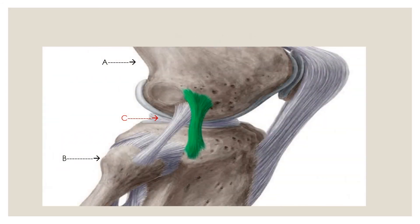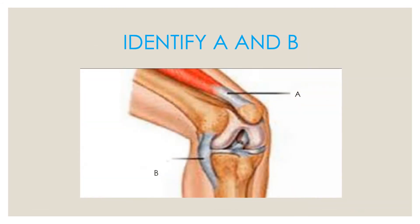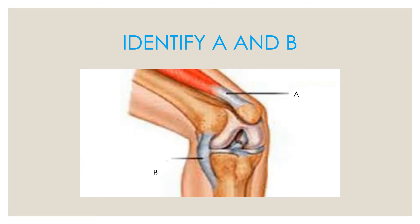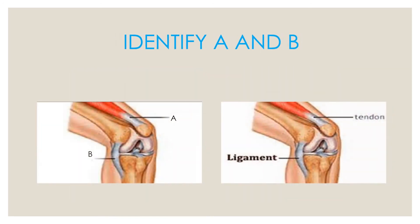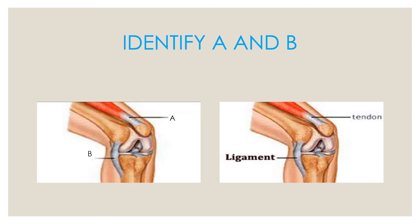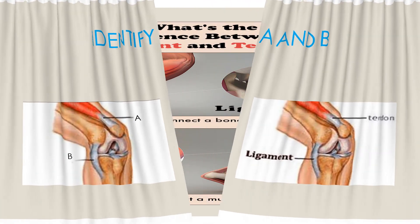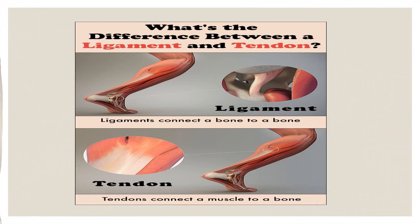Observe this picture carefully. What is A, B, and C? Record your observations. A is a tendon and B is a ligament. A ligament connects a bone to a bone — the association we created was BLOB. Tendons connect a muscle to a bone — the association we created was BOTTOM.